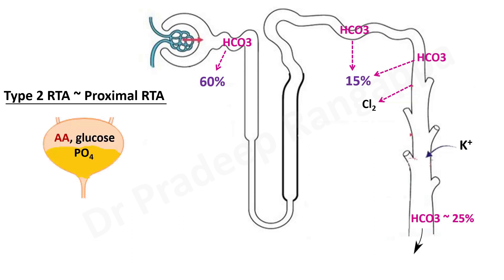Because the proximal convoluted tubule is affected, there will be aminoaciduria, glycosuria, and phosphaturia — findings of type 2 RTA. Urine pH will be less than 5.5 because there is less bicarbonate excretion compared to type 1. This is the key differentiator between type 1 and type 2. Note that type 4 also has urine pH more than 5.5 as they are unable to acidify urine.